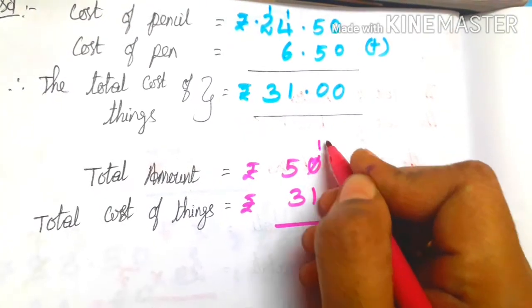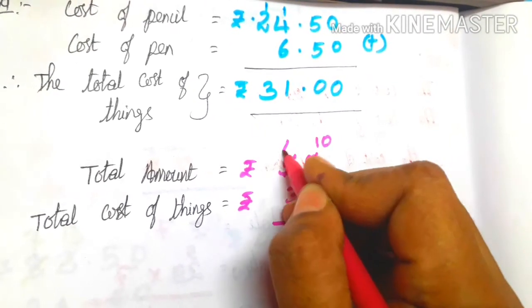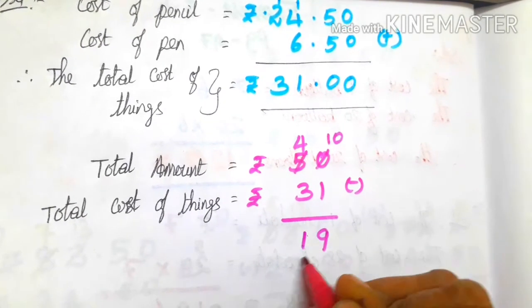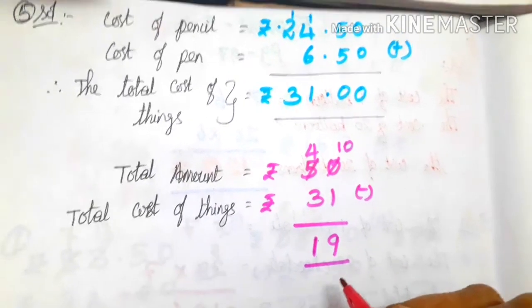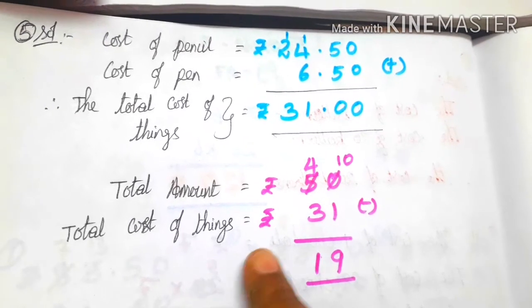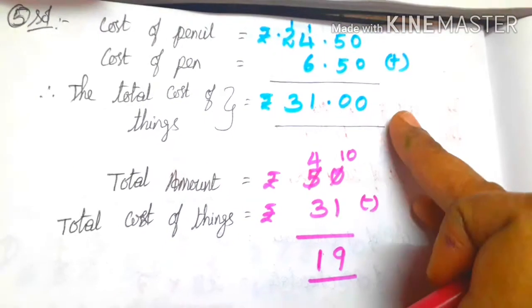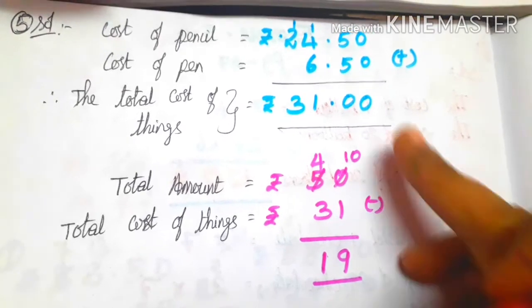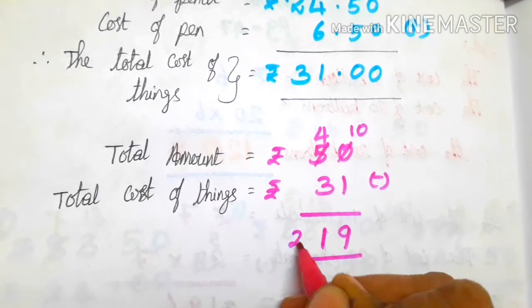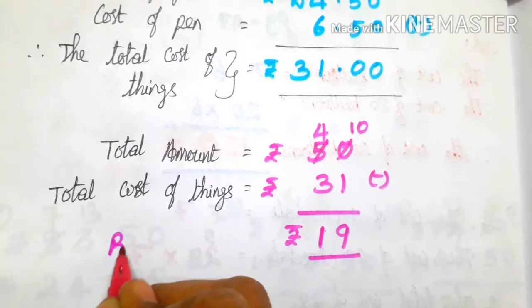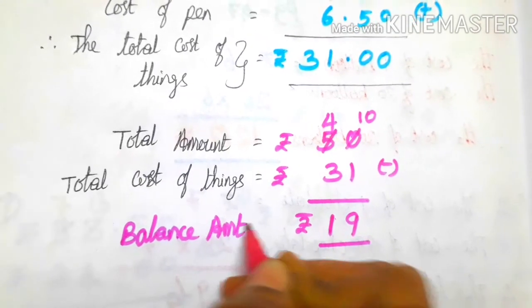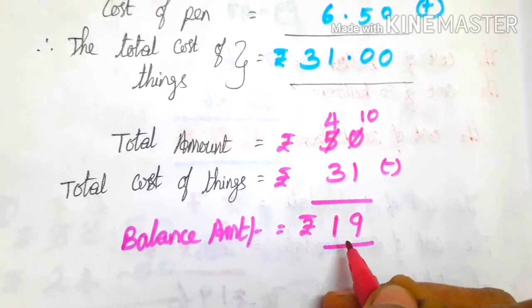10 minus 1 is 9. 4 minus 3 is 1. So 19 rupees is the balance returned by the shopkeeper. Balance amount equals rupees 19.